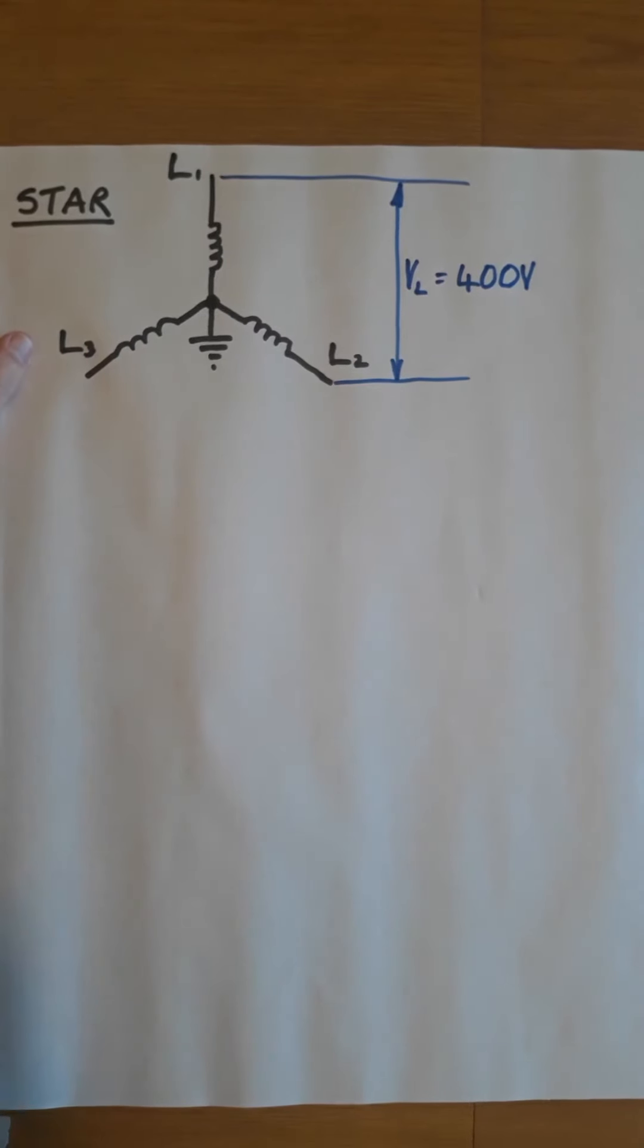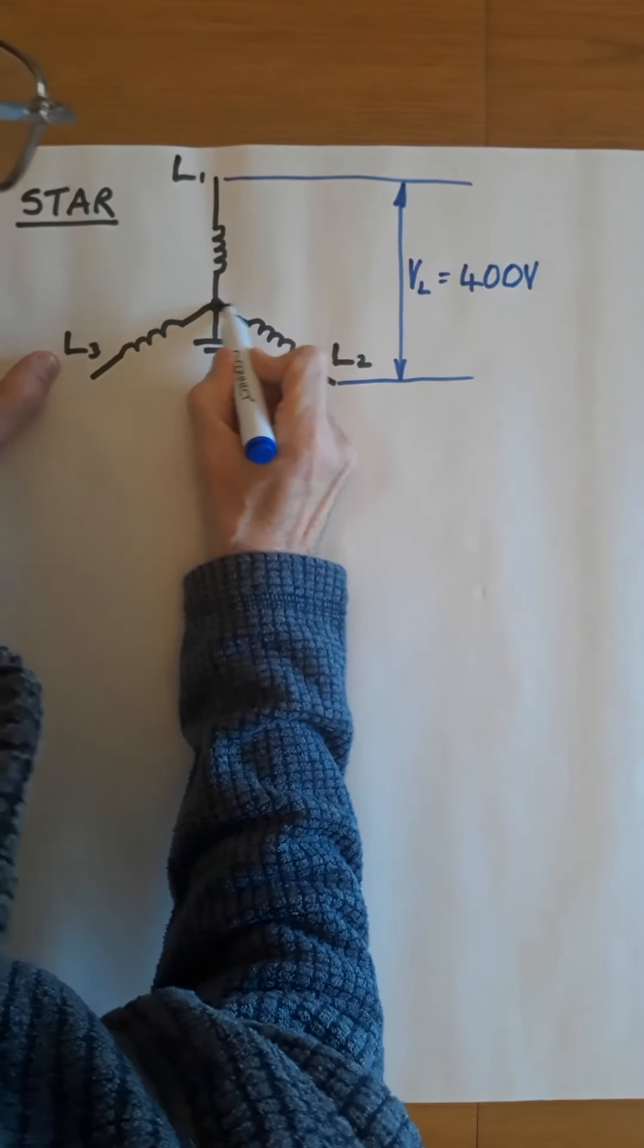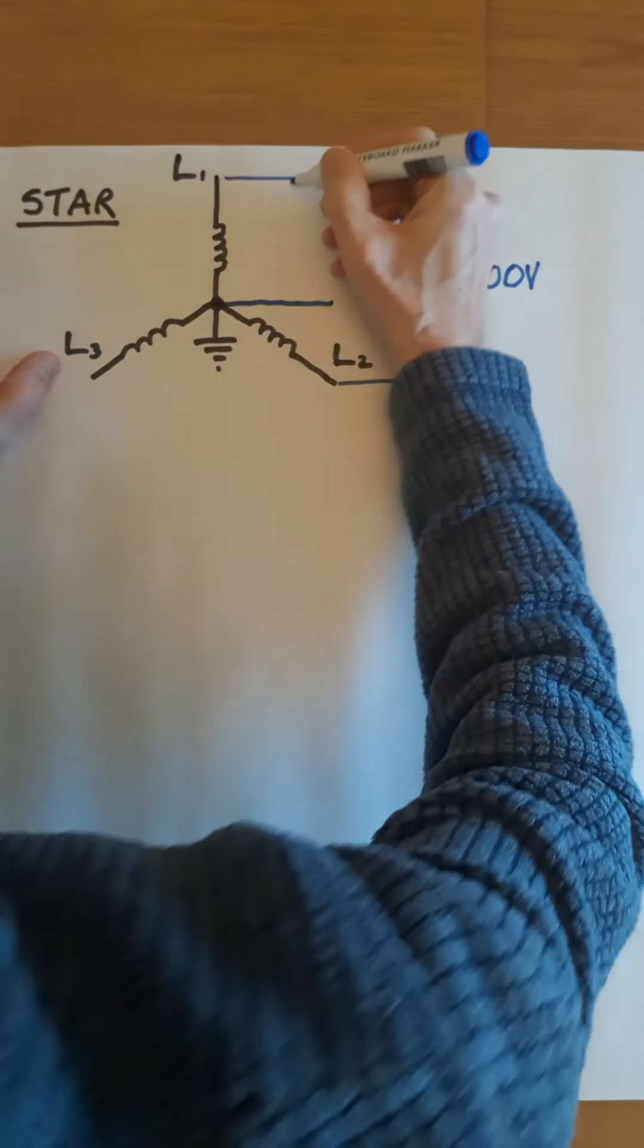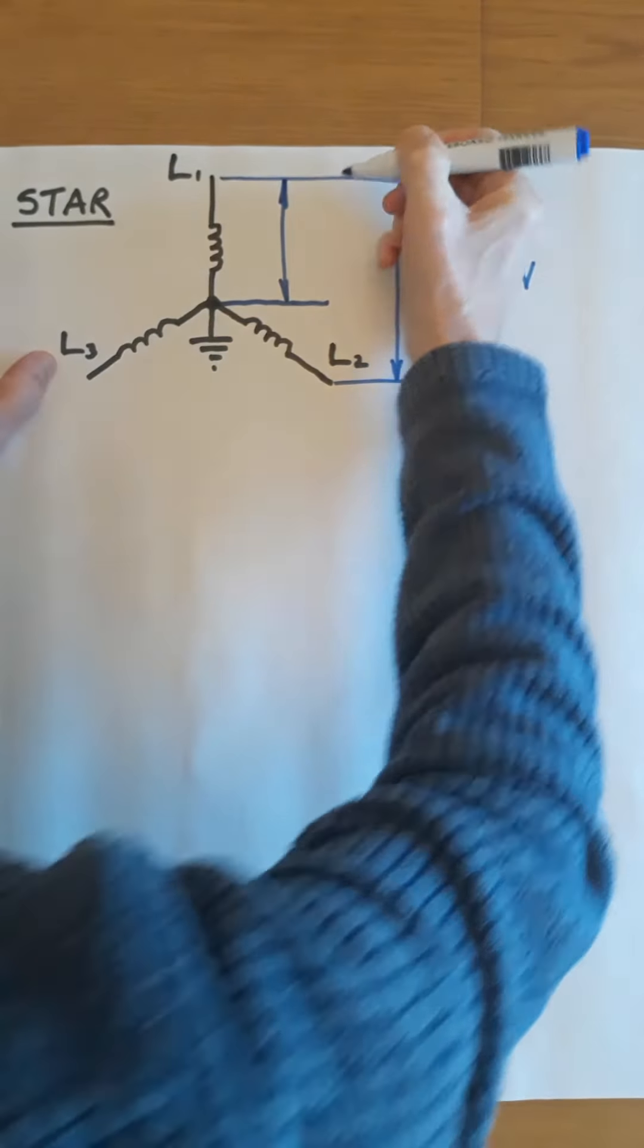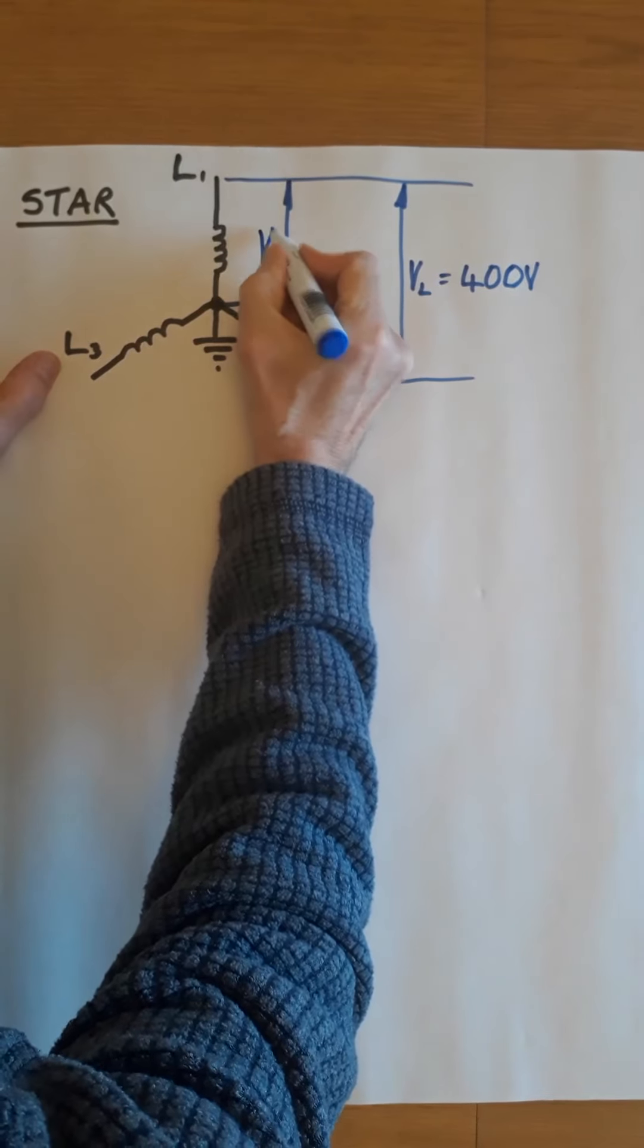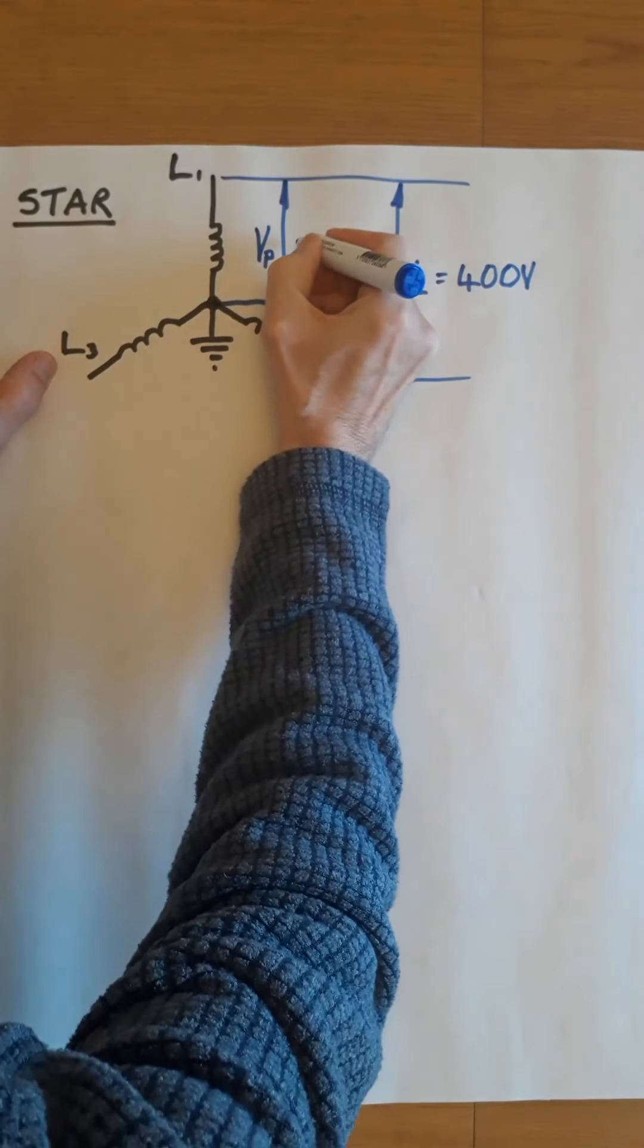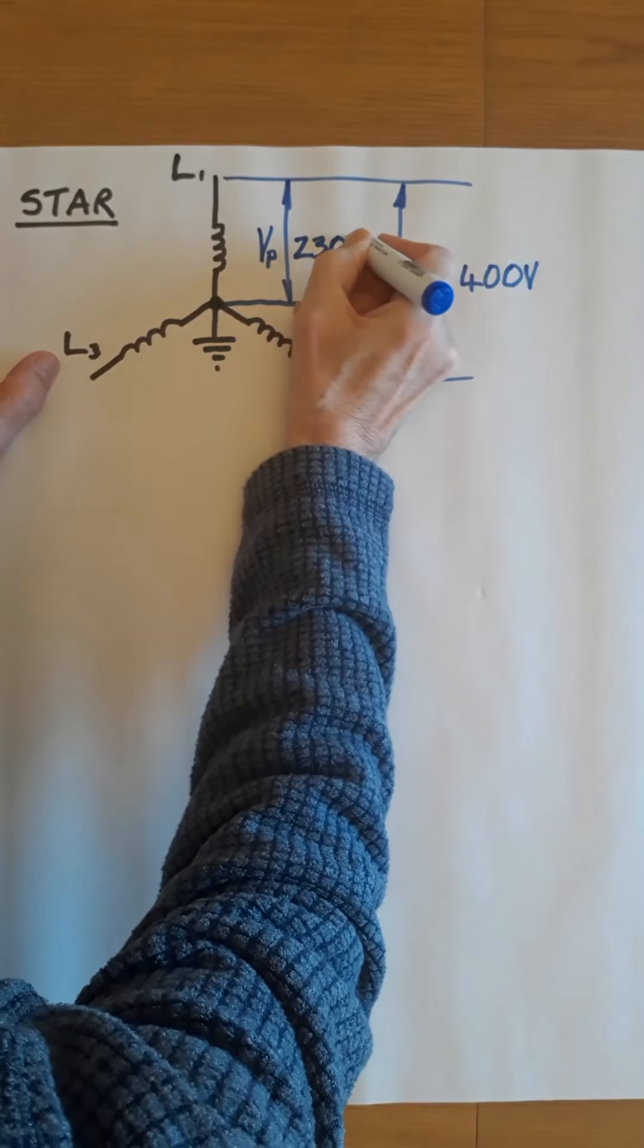If we go from the star point, which of course is our neutral, from the star point to any line, then this is our phase voltage VP. And our phase voltage is the nominal 230 volts.